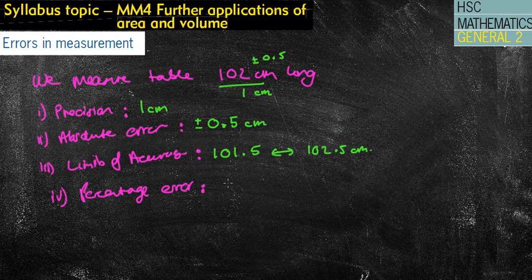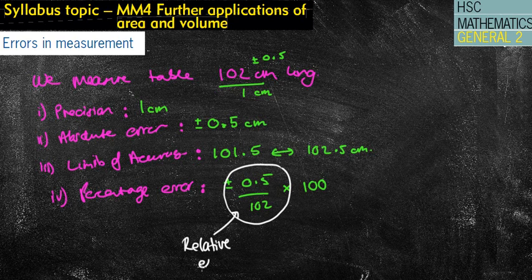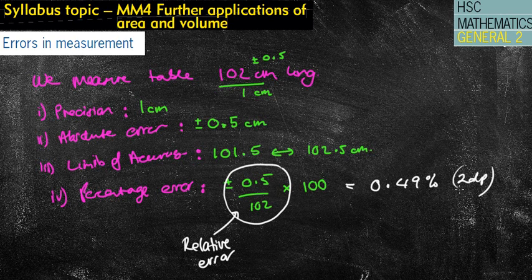My percentage error would be then my absolute error, which is my 0.5, over the true measurement or the exact measurement of 102. And then I would simply times that by 100. Now, just with that, that first part, can often be referred to as the relative error before you get to the percentage error. But then I would simply put that in my calculator and then write that as a percentage, which in this case would be 0.49% to two decimal places. So that's generally what we have done previously.